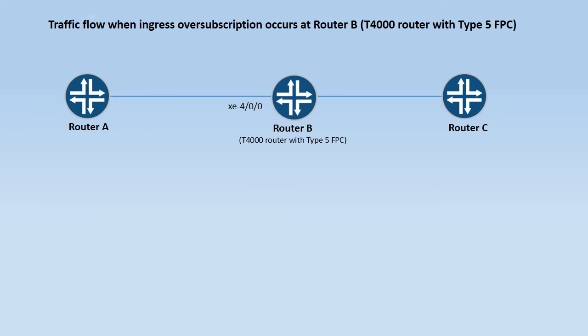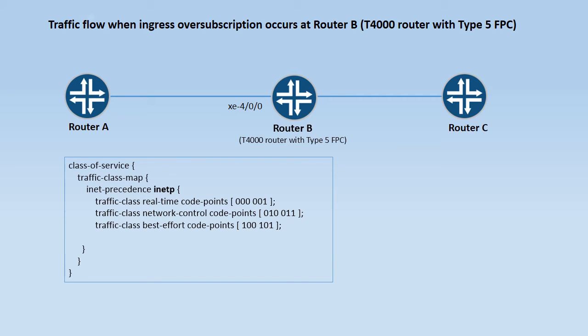Now let's understand the new approach introduced in Junos OS release 14.2 for handling ingress over subscription on T4000 routers with Type 5 FPCs. You can define a traffic class map by associating the class of service code points of the incoming packets with the traffic class, such as real time, network control, or best effort.